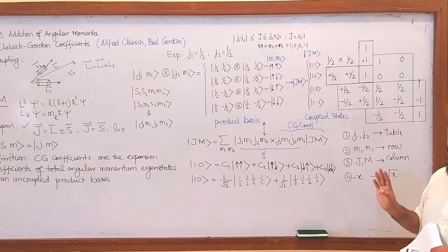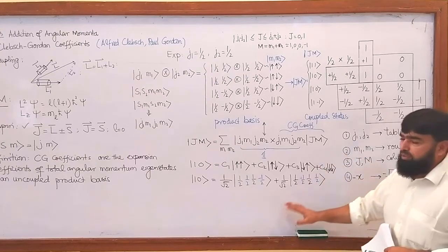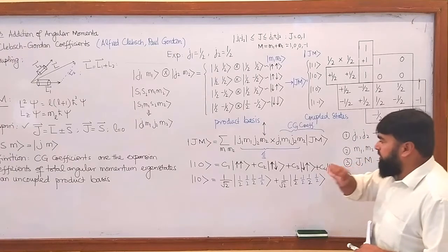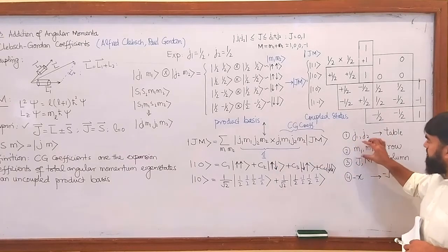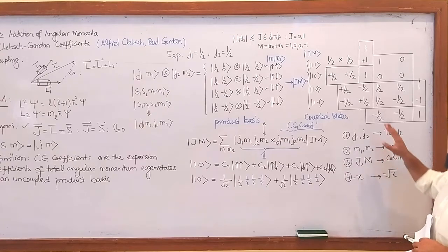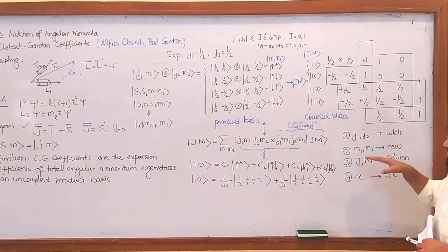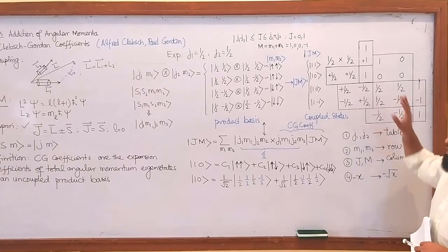We will take enough time on this one so that you understand and then we will move on. Don't worry. It's a bit tricky but it's easy to understand. The very first thing — don't forget to keep these rules in mind. We will have to read the table. These are the four steps to read the table — the Clebsch-Gordan coefficients. These are the four rules to read the table.